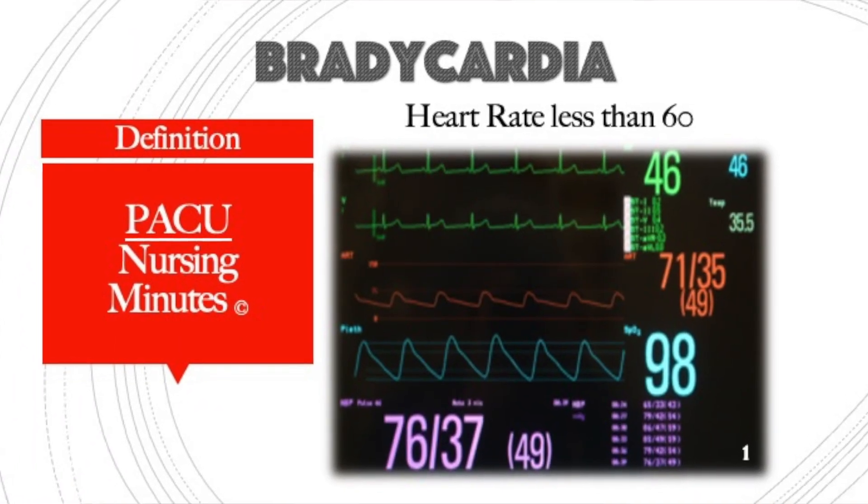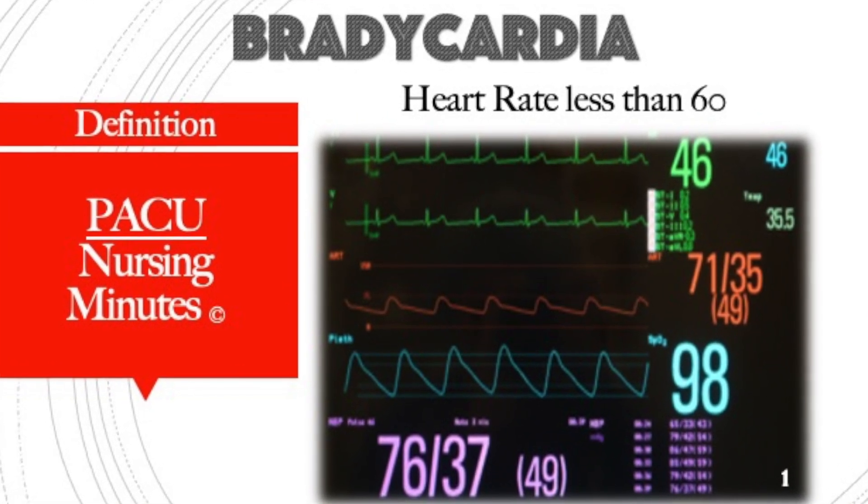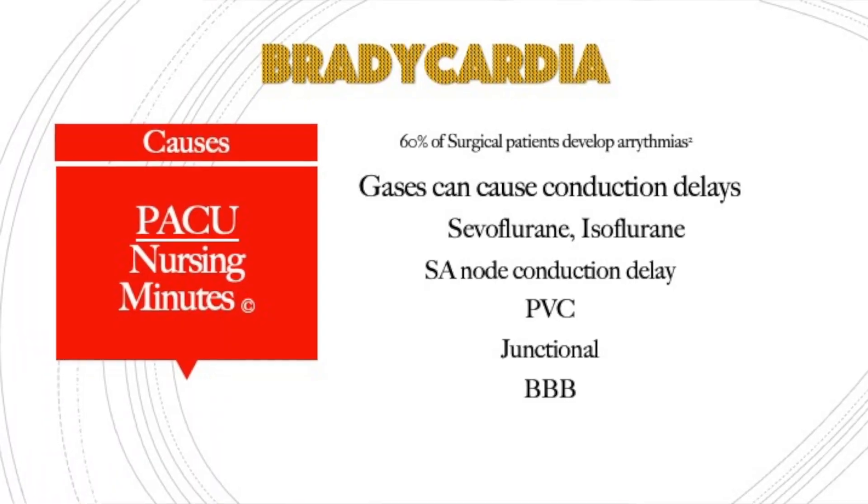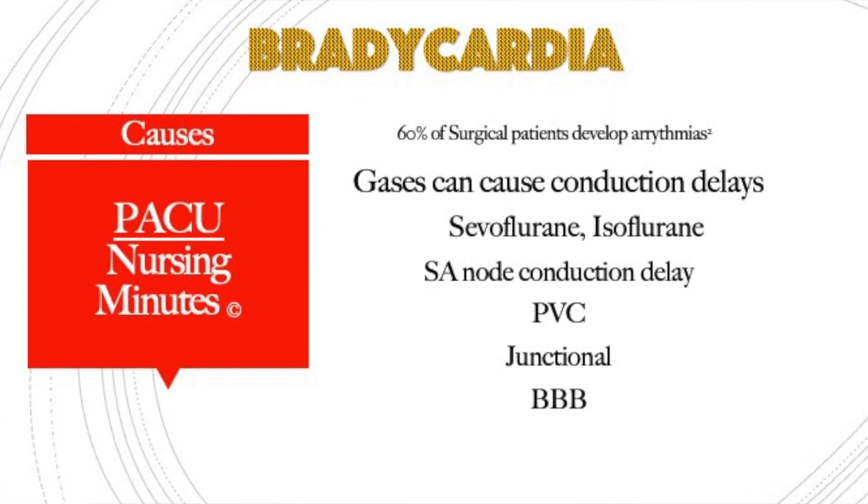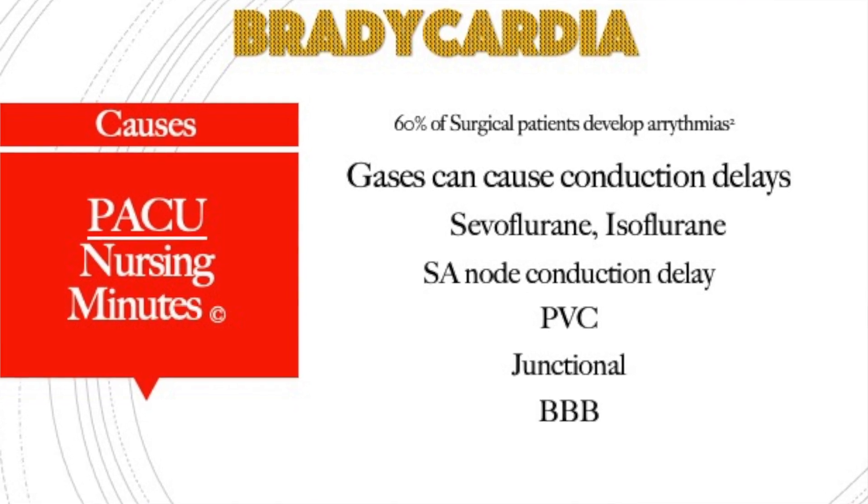Bradycardia is a heart rate less than 60, and about 60% of our surgical patients will develop some kind of arrhythmia. Bradycardia and arrhythmias are commonly caused by anesthesia, which has an effect on the heart through conduction delays. Sevoflurane and isoflurane cause SA node delay and delay at the AV node, throughout the bundles of His and the Purkinje fibers — so you can see anything from a first-degree AV block to a bundle branch block to even a junctional rhythm.